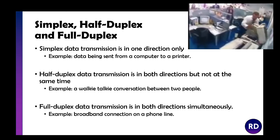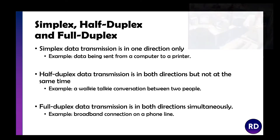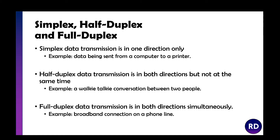Half duplex means data transmission goes in both directions, but not at the same time. It's like a walkie talkie — both parties can communicate, but not simultaneously. Full duplex data transmission is both directions simultaneously. A broadband connection on a phone line is full duplex — multiple people at home can be on the internet at once, and if you ring somebody up you can both talk at the same time.